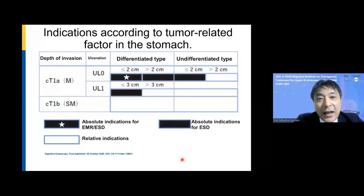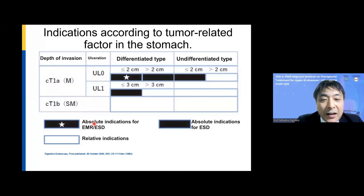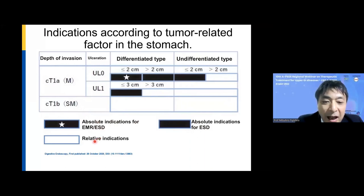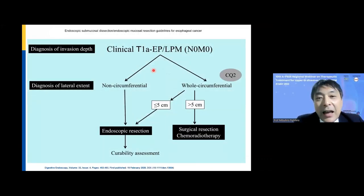For the stomach, small differentiated-type non-ulcerative mucosal lesions are the target of EMR or ESD. When the region becomes bigger, has ulcerative findings, or is undifferentiated type, these regions are targets for ESD only — not EMR. Other early gastric cancers are considered relative indications when endoscopic resection is applied.